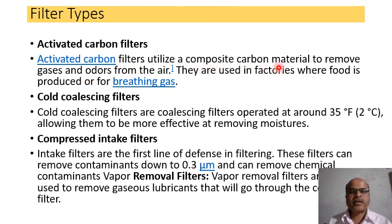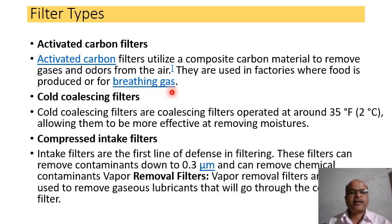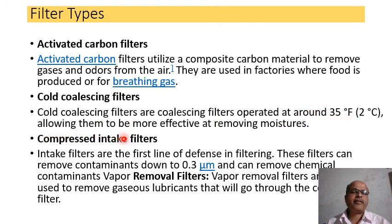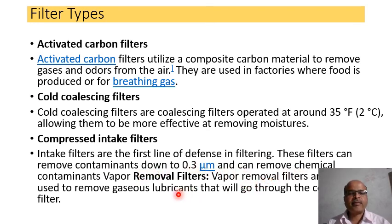Filter types: Activated carbon filters utilize composite carbon material to remove gases and odors from the air; they are used in factories where food is produced or for breathing gas. Coalescing filters operate at around 35 degrees, allowing them to be more effective at removing moisture. Compressed intake filters are the first line of defense in filtering and can remove contaminants down to 0.3 micrometers, including chemical contaminant vapors.